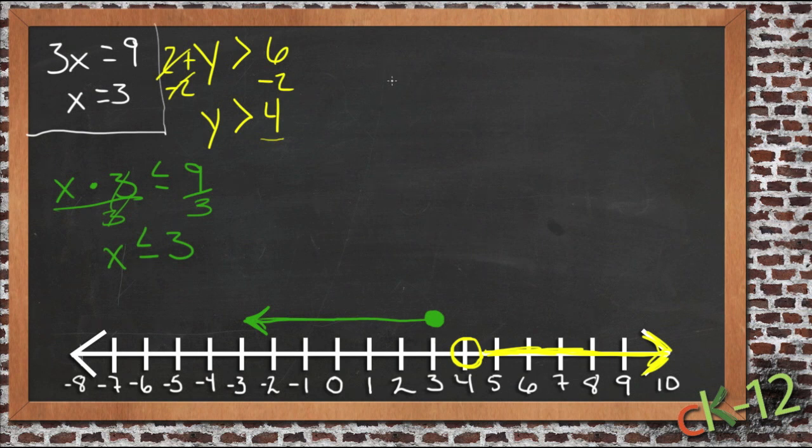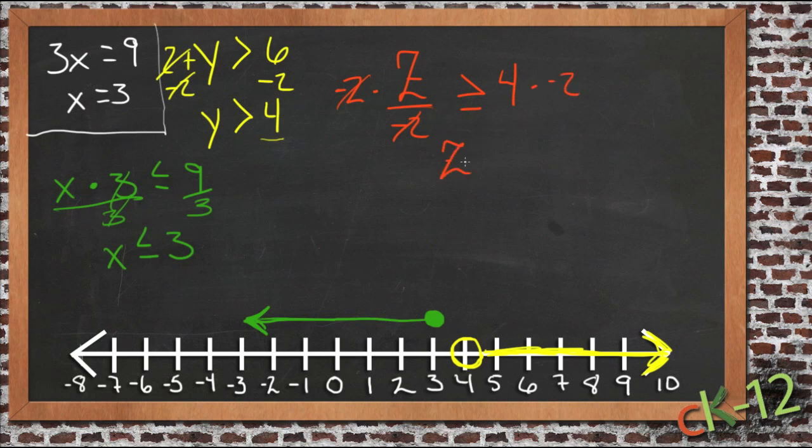What if we had z over negative 2 is greater than or equal to 4? So now we need to get rid of this negative 2. The variable is being divided by it, so the opposite would be to multiply by it. So our negative 2's cancel. 4 times negative 2 gives us z, and 4 times negative 2 is negative 8.